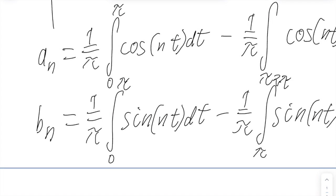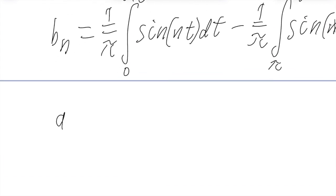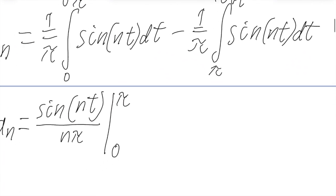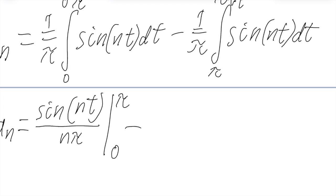So the next step would be to actually integrate these. So a_n will become sine of nt over n because the n is not an integration variable. So we have to divide by it. And this is from 0 to π. And of course, we can't forget to multiply by the one over π. That'll just go down here. And then from this, we'll subtract a similar story. Sine of nt over nπ. But from π to 2π.